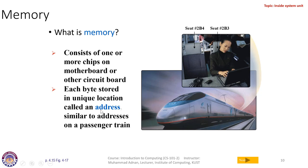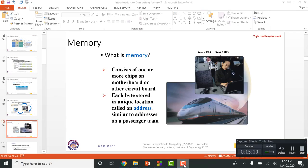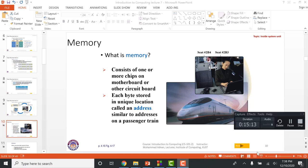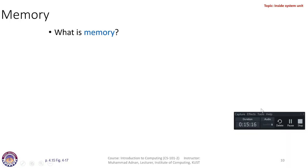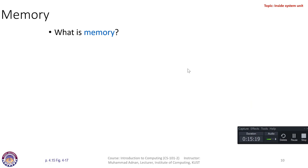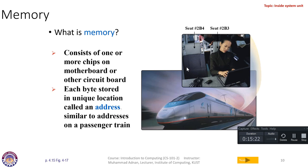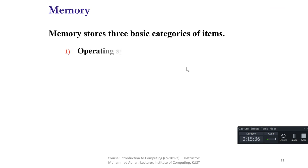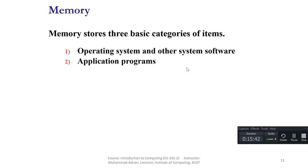Every memory location has an address similar to the address on a passenger train — just as a passenger train has seat addresses, every memory location has a unique address. Memory stores basically three categories of items: the operating system and other system software, application programs that users run such as games, multimedia software, or web browsers, and the data and resulting information.